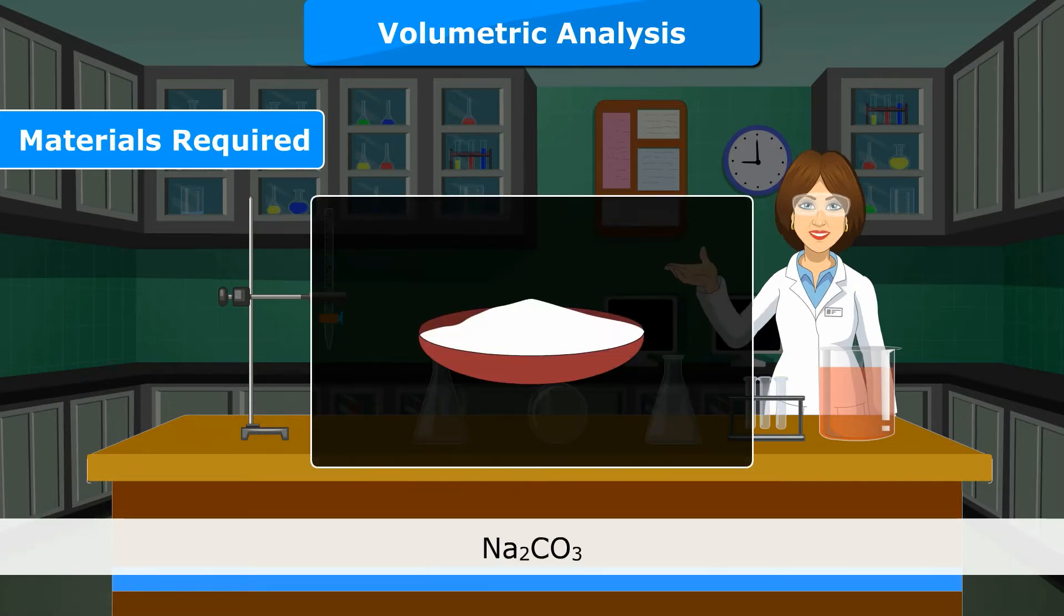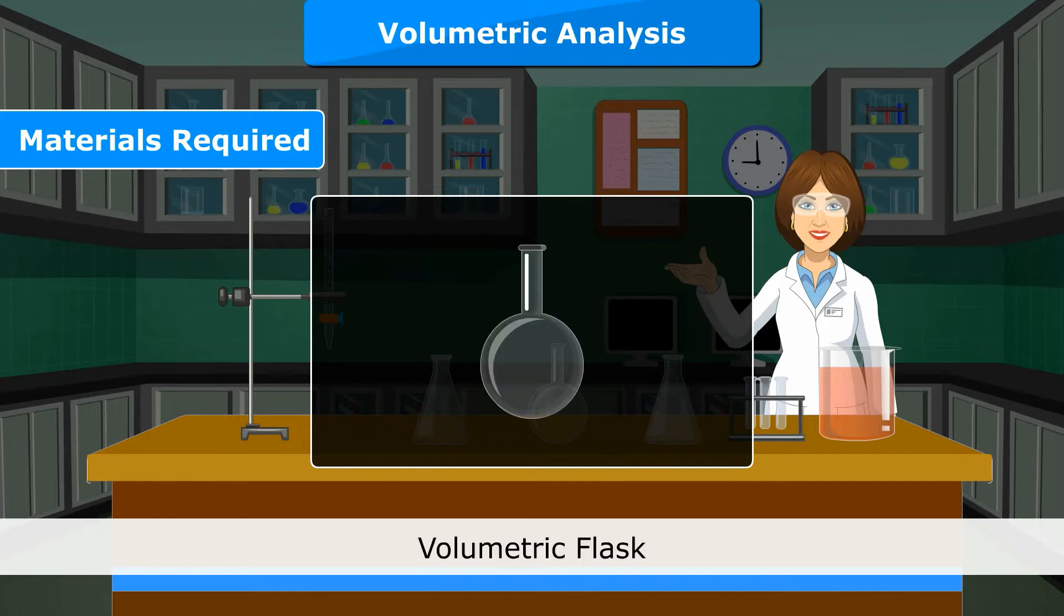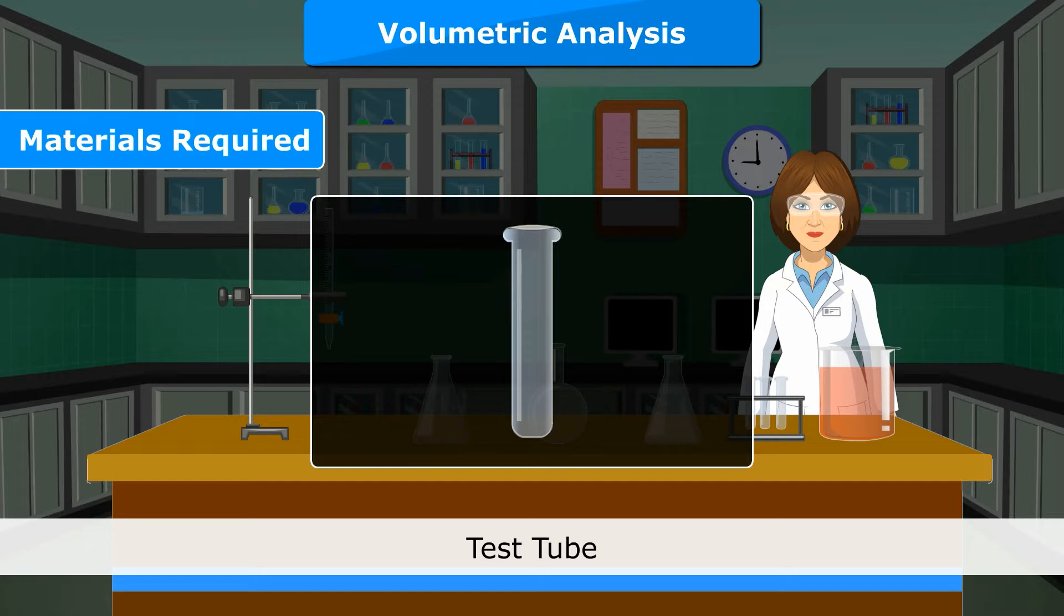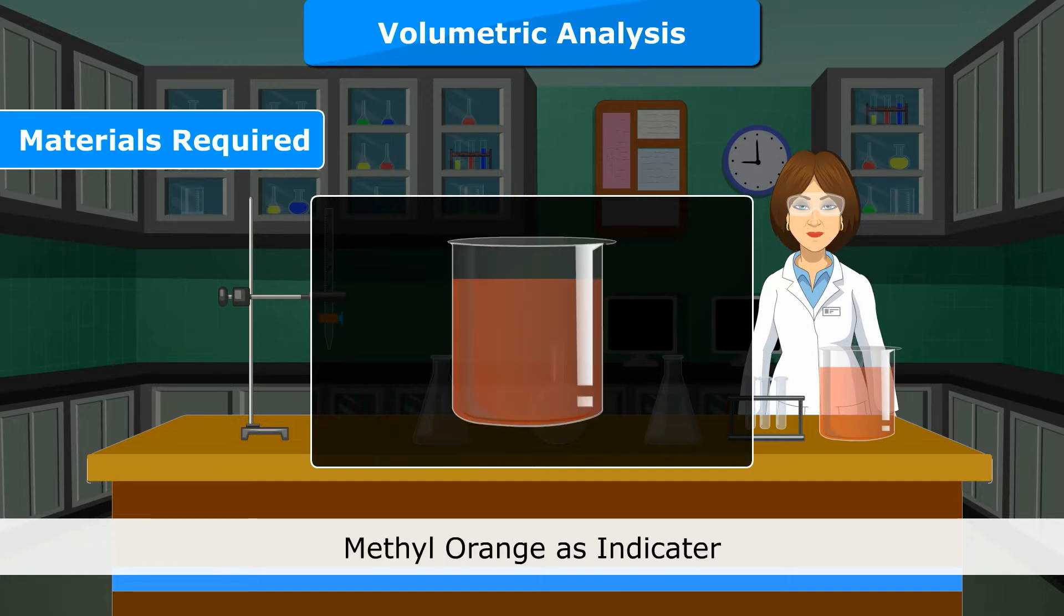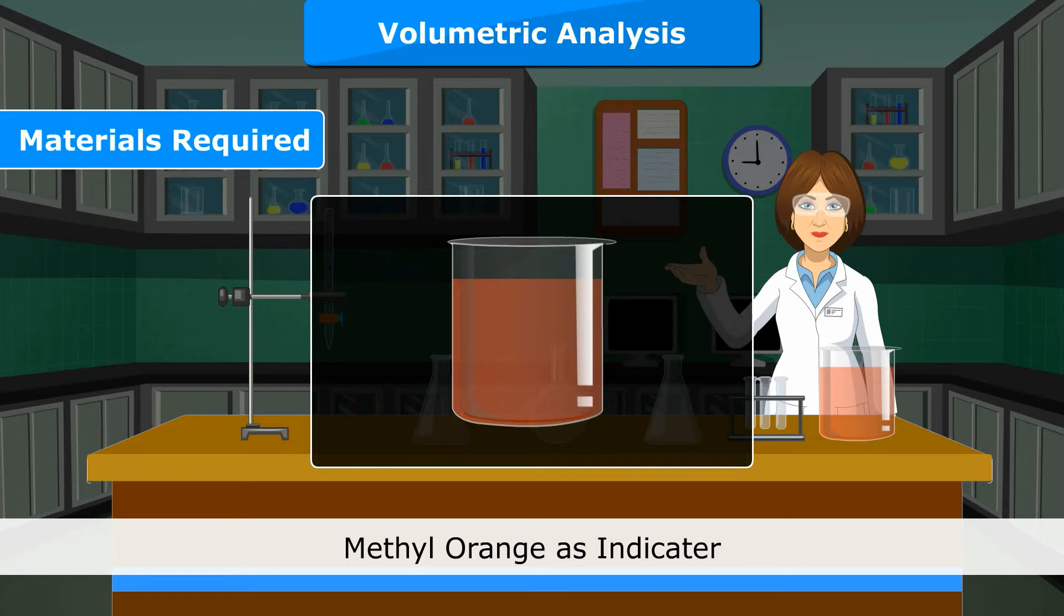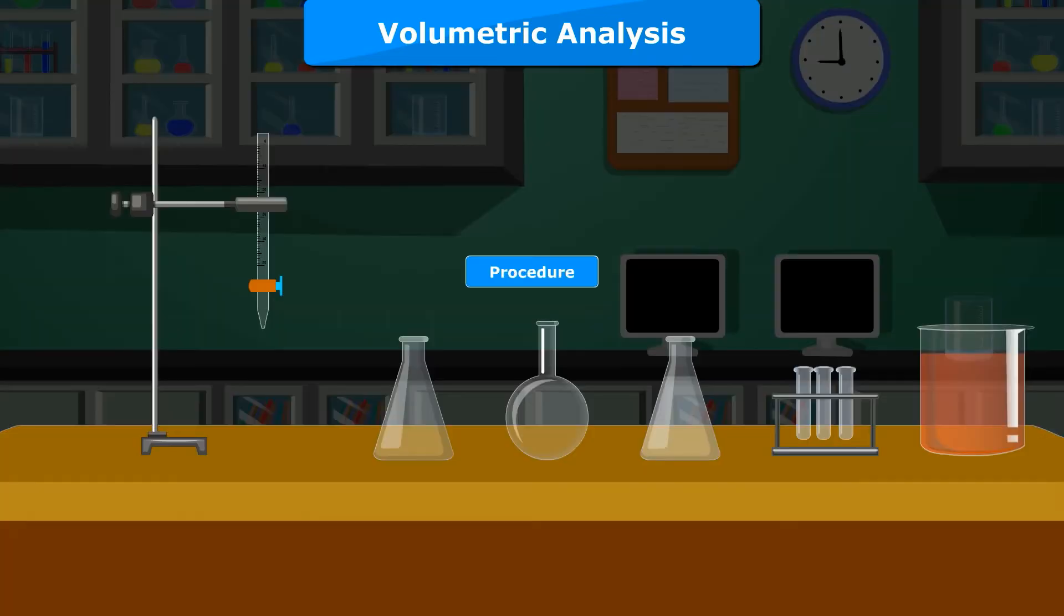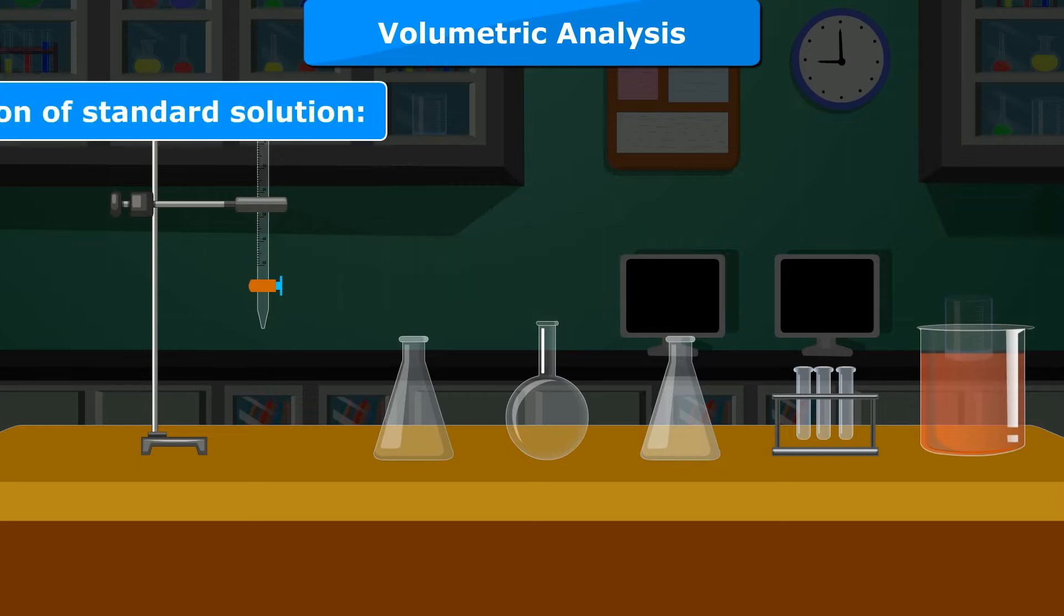Pipet, Na2CO3, Volumetric Flask, Distilled Water, Test Tube, Conical Flask, Methyl Orange as Indicator, M by 10 Solution of HCL. Procedure A: